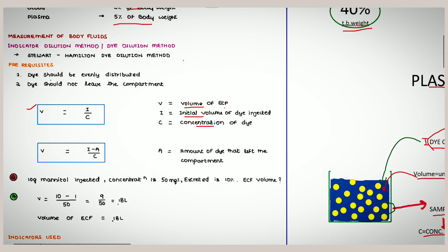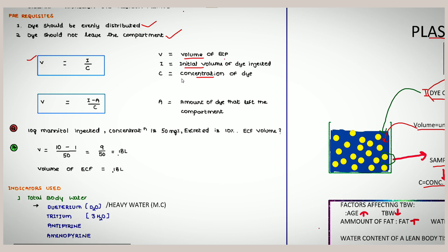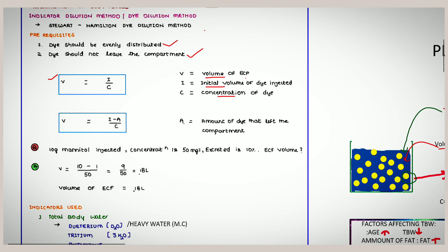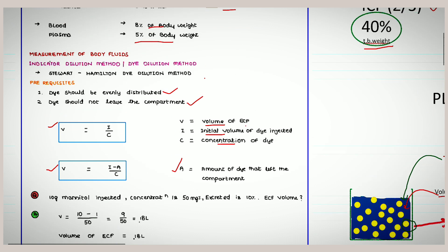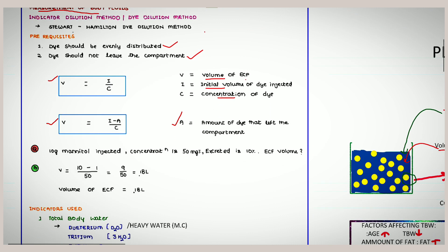Two conditions are required: the dye must be evenly distributed, and it must not leave the compartment. If some dye leaves or is metabolized, the formula changes to V = (I − A) / C, where A is the amount of dye left in the compartment or metabolized. This is known as the indicator dilution method or dye dilution method, termed by Stewart and Hamilton — hence called the Stewart-Hamilton dye dilution method.